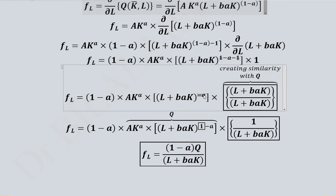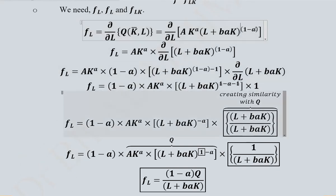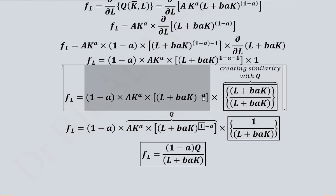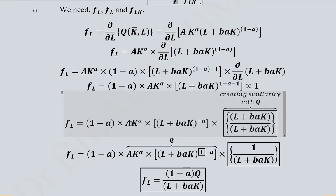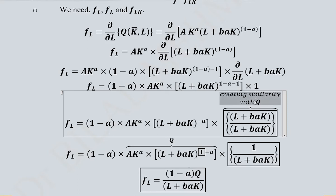Once we reach a term with power minus A, we note that the original function has a power of 1 minus A. Looking at the elasticity formula, it contains the original production function Q, so developing Q inside the expression will allow cancellation and simplification. To introduce Q, I multiply and divide by the same base raised to power 1, maintaining the balance of the equation.